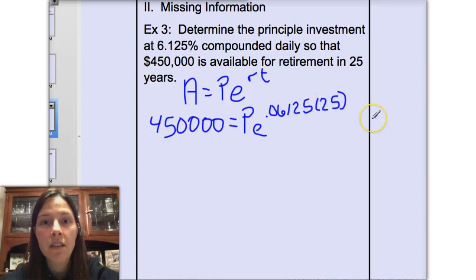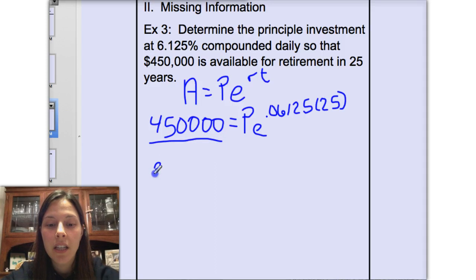So when we begin to solve this, on the other one we divided by the principal first because we were solving for a variable in the exponent. This time we're solving for the principal, so what we're actually going to do is divide both sides by e to the 0.06125 times 25 power.